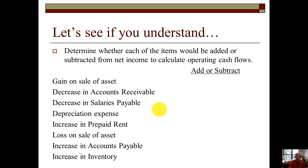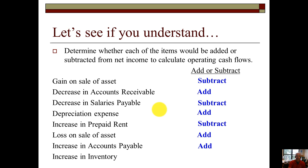Let's review key points — determine whether each item is added or subtracted from net income to calculate operating cash flows. Gain on sale of asset: subtract. Decrease in accounts receivable: add. Decrease in salaries payable: subtract. Depreciation expense — a non-cash expense: add. Increase in prepaid rent — a current asset: subtract. Loss on sale of land: add. Increase in accounts payable: add. Increase in inventory — a current asset: subtract.